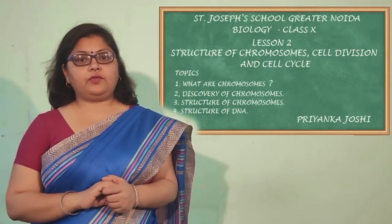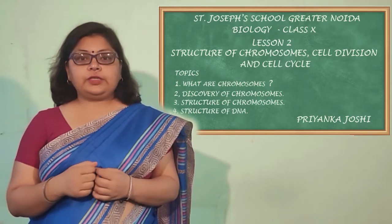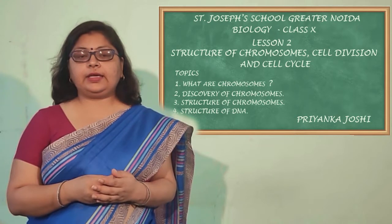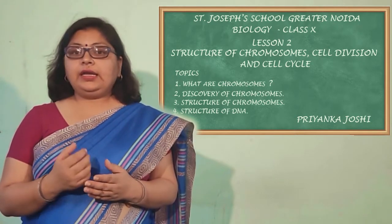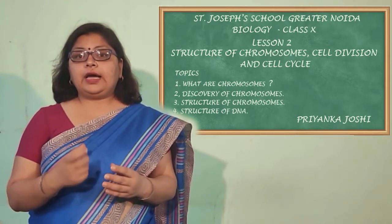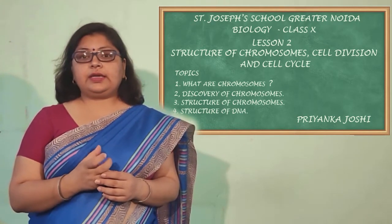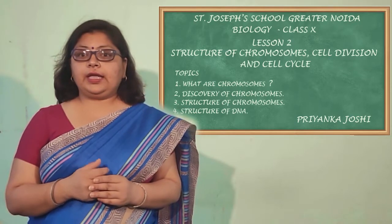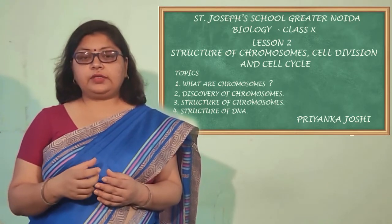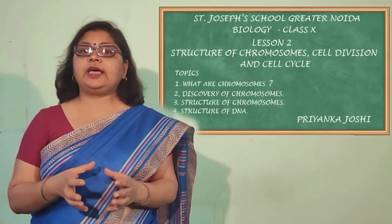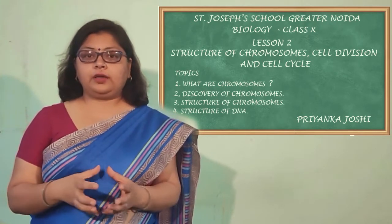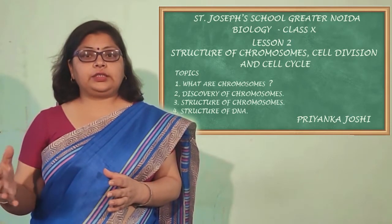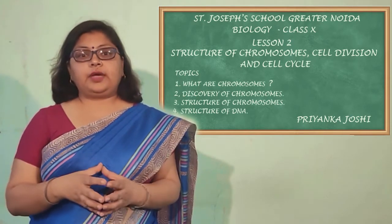Next is the discovery of chromosomes. Chromosomes were first discovered in the animal cell by Walter Fleming, a German scientist, in 1882. He discovered them in the larvae of salamander, which is an amphibian animal. He saw thread-like structures and named them chromatin fibers. In 1882, highly magnified microscopes were not available, so only limited study was done. Later, the structure became clearer with high-magnification microscopes.